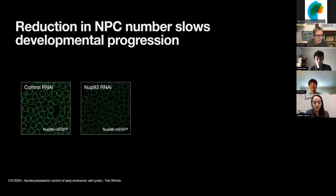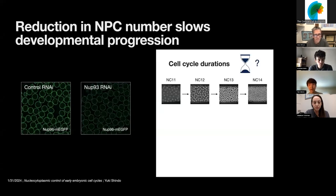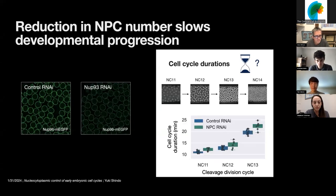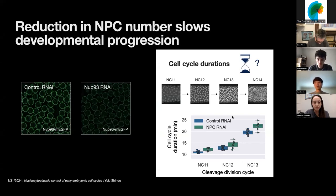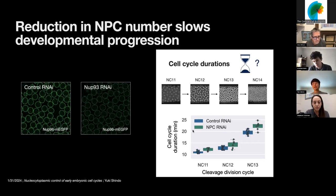Finally, I wanted to test if changes in NPC number have any meaningful effect on development. I partially depleted NPCs using RNAi and looked at how that might affect cell cycle dynamics during early embryogenesis. The data show x-axis as cleavage division cycle — essentially the stage — and y-axis as cell cycle durations, with blue as control RNAi and green as NPC depletion. Overall, cell cycle durations were longer when NPC was depleted, suggesting that NPC number is important for the proper pacing of early embryonic development.